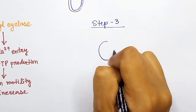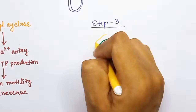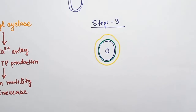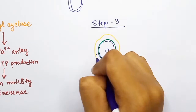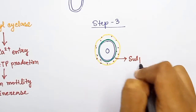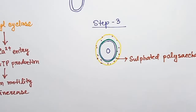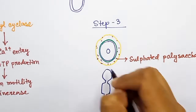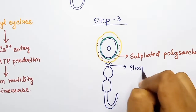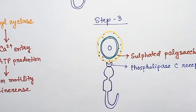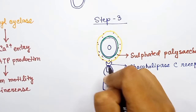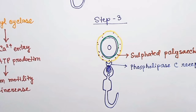Now when the sperm is sticking on the egg jelly layer, comes the third step. Another molecule, also present on the egg jelly, which is a saccharide — a sulfated polysaccharide — will interact with a receptor present on the head of the sperm. This receptor is known as phospholipase C receptor. This receptor will bind to the polysaccharide and will cause the acrosome to fuse with the cell membrane of the sperm head, which will cause the release of the acrosomal material towards the egg.